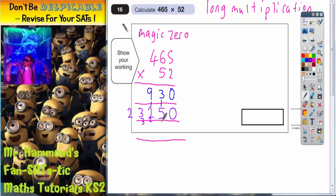That makes 23,250. Now on the final line, all we've got to do is add these two answers together. Because remember, the blue answer is 2 lots of 465, and the purple answer is 50 lots of 465. Add the two together, and we'll have 52 lots of 465, which is what we're looking for.